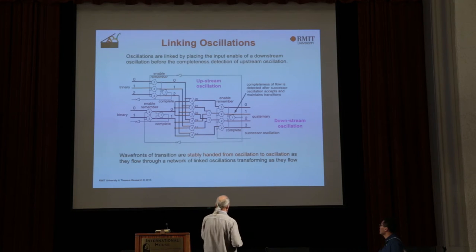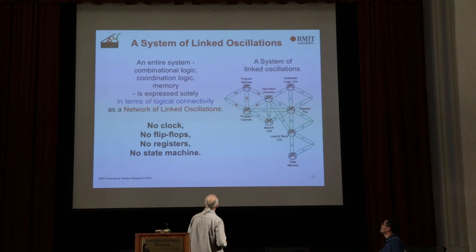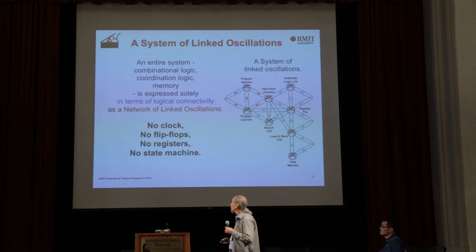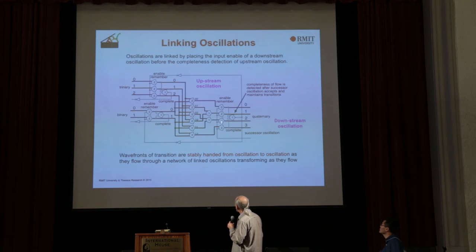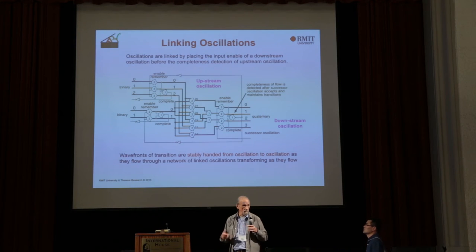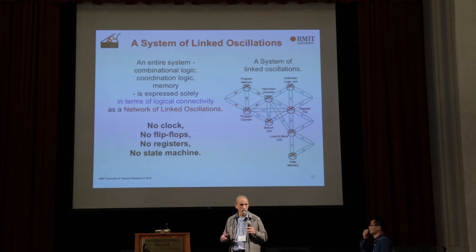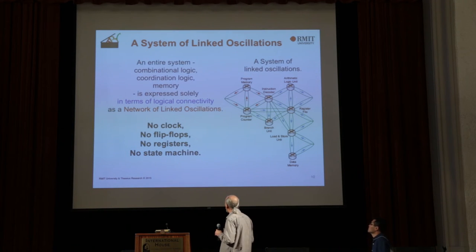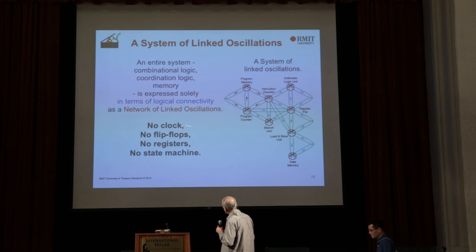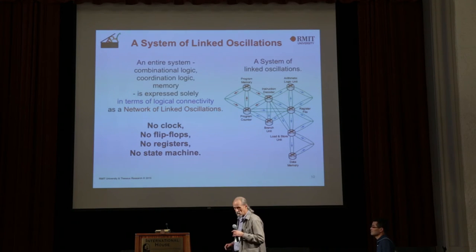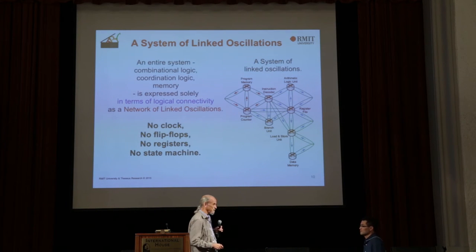Wave fronts of transitions are stably handed from oscillation to oscillation as they flow through a network of linked oscillations, transforming as they flow. We can build an entire system with linked oscillations. The combinational logic, the coordination logic, and the memory are all expressed as logical connectivity — purely in terms of logical relationships. It is purely logically determined, all in one form of expression. This is the RISC-V architecture expressed as a network of linked oscillations — no clock, no flip-flops, no registers, no state machine, just a network of logical relationships.